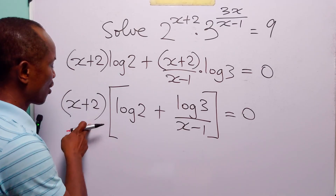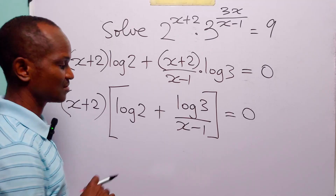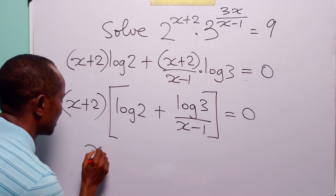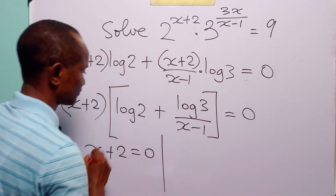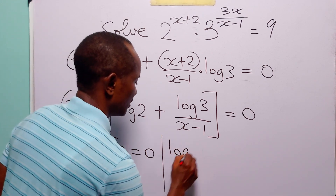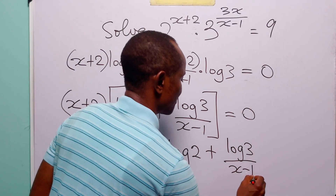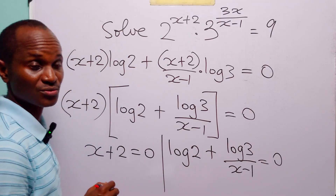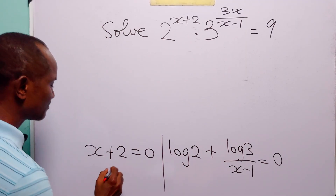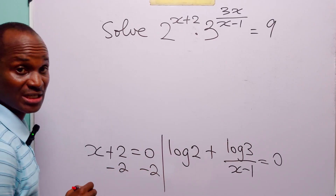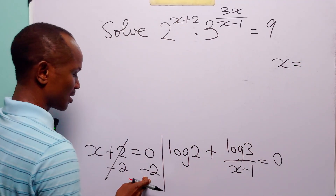That means either one of the items is equal to zero or both of them are equal to zero. So from here we have that either x plus 2 is equal to zero, or log 2 plus log 3 over x minus 1 is equal to zero. To solve the first equation, we simply subtract 2 from both sides and we have that x is equal to minus 2.